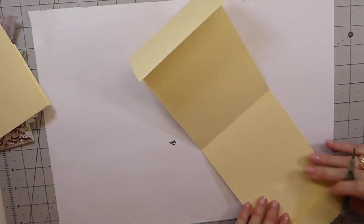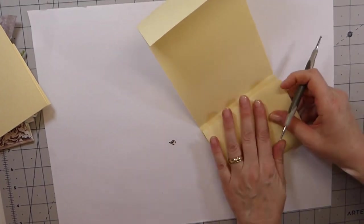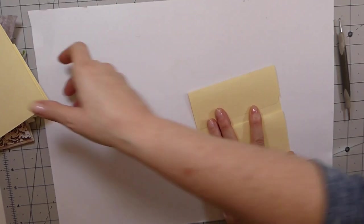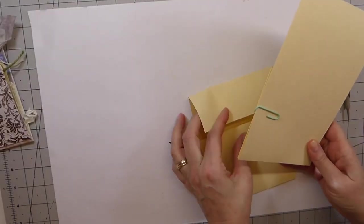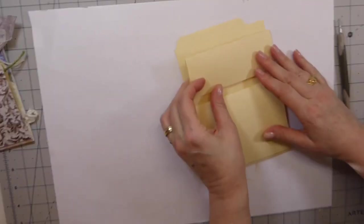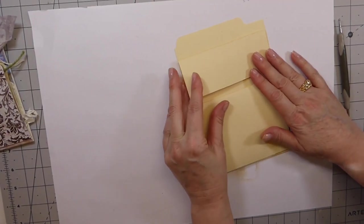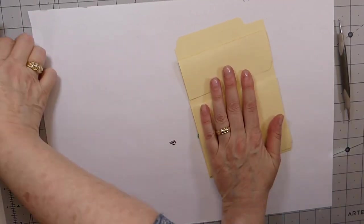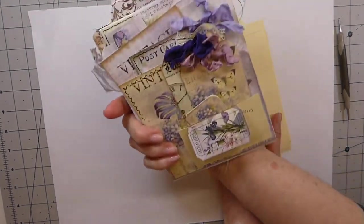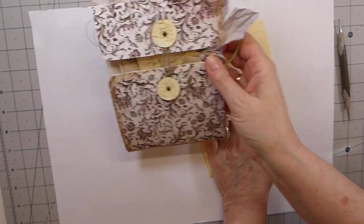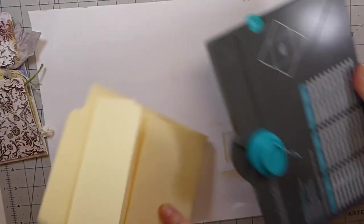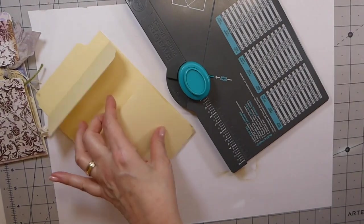And so what that does is that just folds up so that we've got kind of like the coin envelope portion of the front, whichever you want to call it. I think this is more the front. So now all I'm going to do is just go ahead and round off these corners.